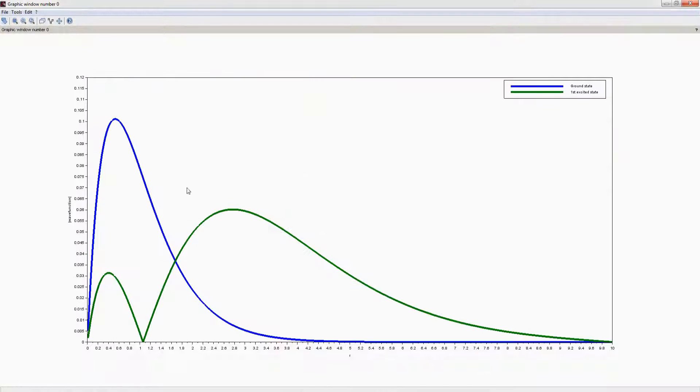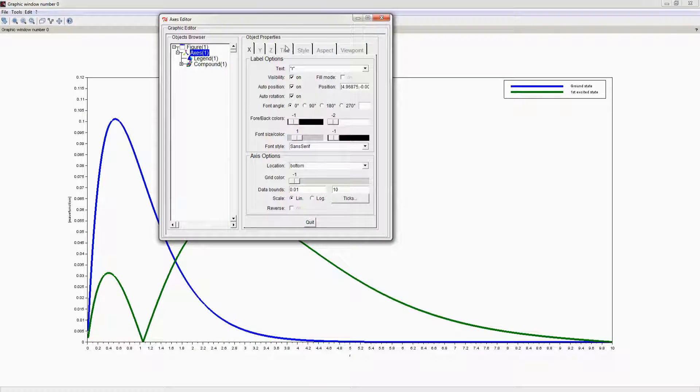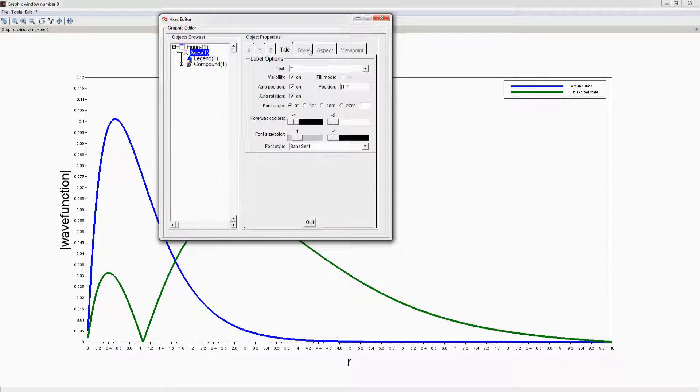We can change font size of labels, axis values and legend using axis editor from axis properties in edit menu of graphical window as shown in the video.